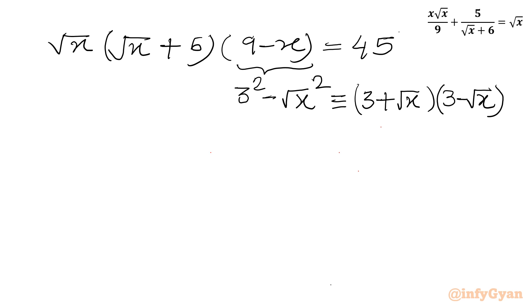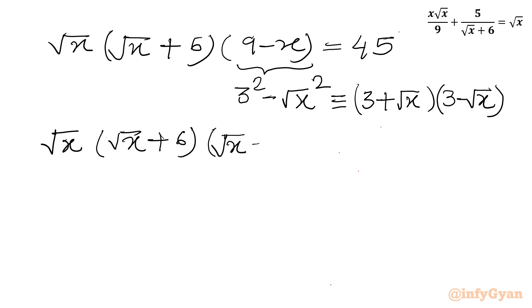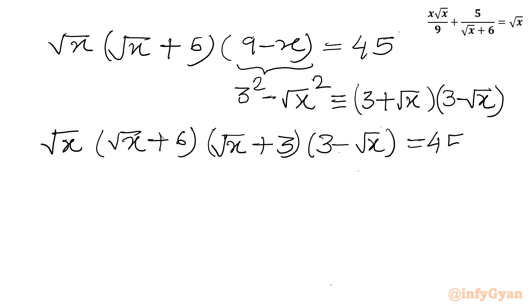So I will be writing √x times (√x plus 6) times (√x plus 3) times (3 minus √x), and the right-hand side will be 45 only.